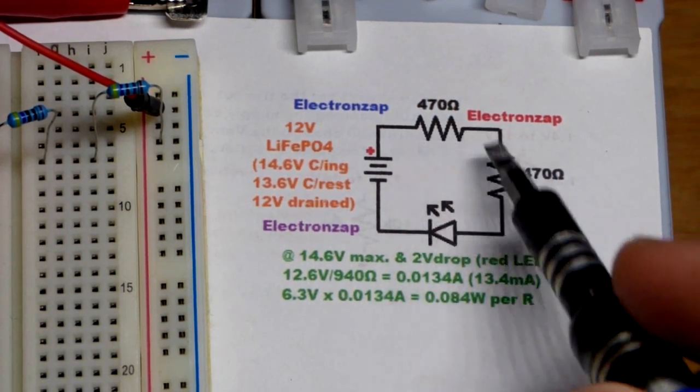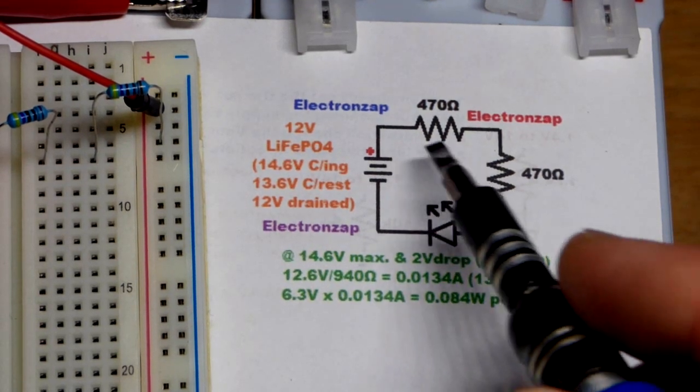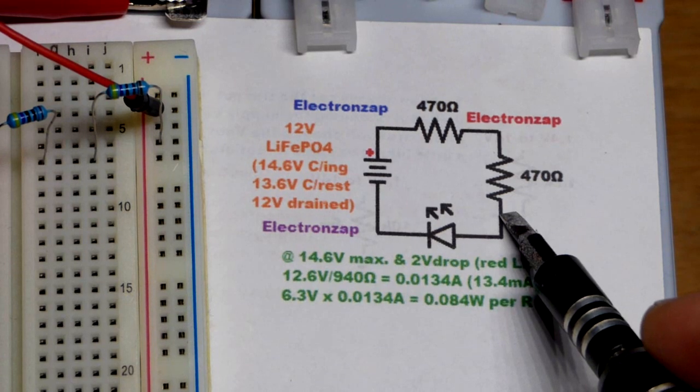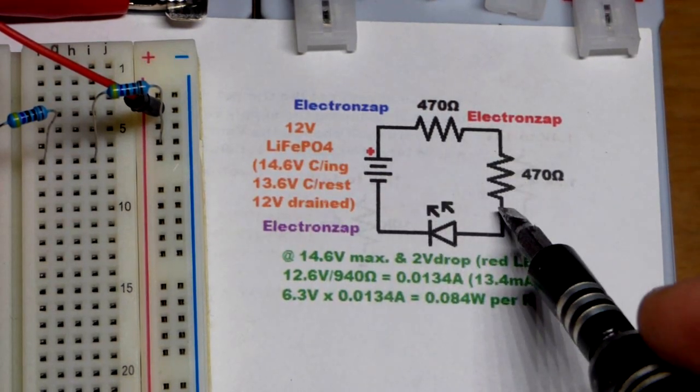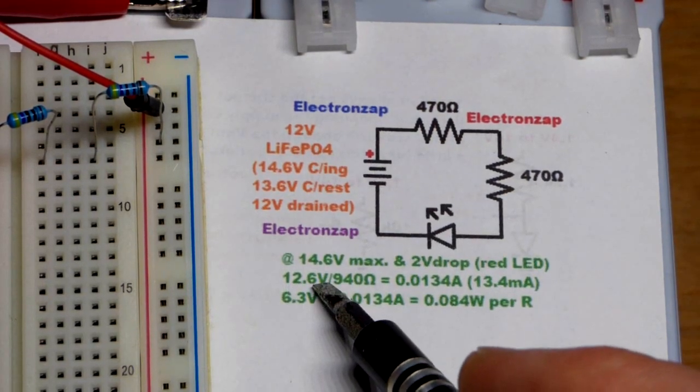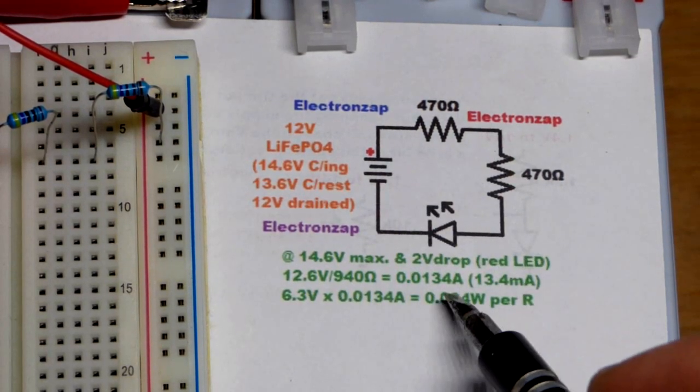If we used a single 1000 ohm resistor, it would get pretty hot. So it's not exceeding its wattage rating, but more than half of its wattage rating by quite a bit. And so with these two resistors, they're going to split up that voltage. So 12.6 volts, but ultimately with 940 ohms.